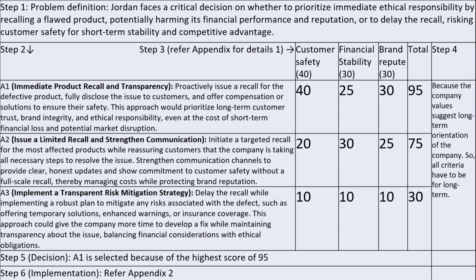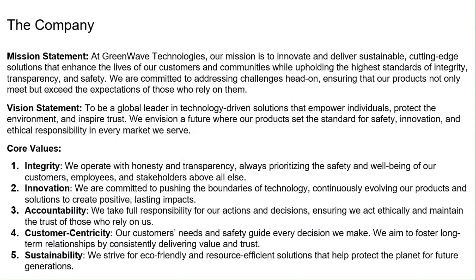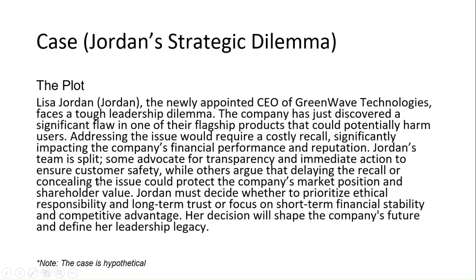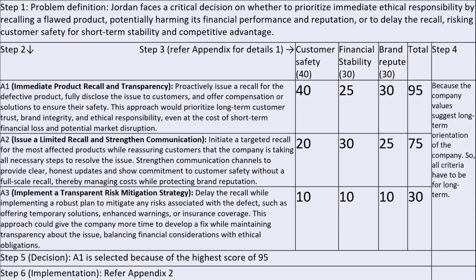Their weights also come from the case. It is quite explicitly provided that the company is very concerned about the safety of its consumers, and also about transparency. So we give more weight to customer safety — 40% here. Then comes financial stability, and brand repute at 30%. These are subjective; you might say 50%, 20%, etc., but in total they should add up to 100%.